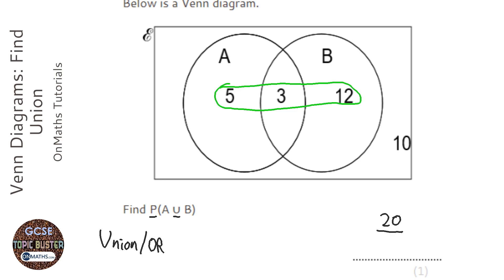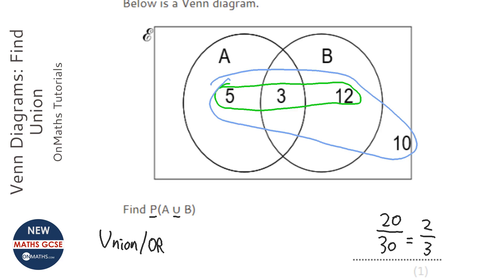And there are, let's have a look, 30 in total. So to find the probability, it's over the total amount. And we can simplify that to 2 over 3. So the answer is 2 thirds chance of picking one of the values in A or B.